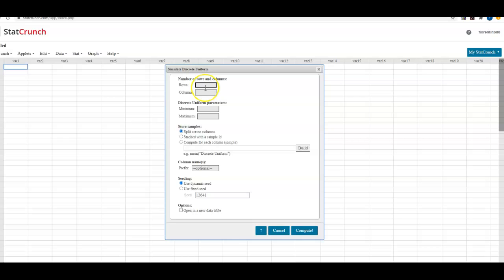Again we have a number of eight rows, we have one column, we have one to ten students because that is the parameters.